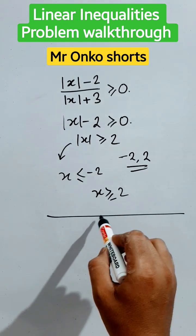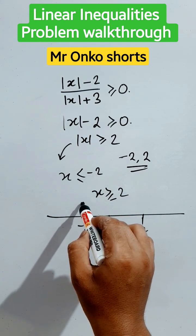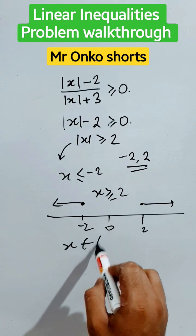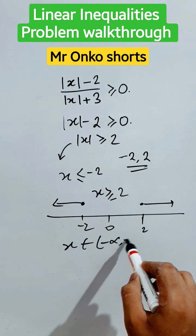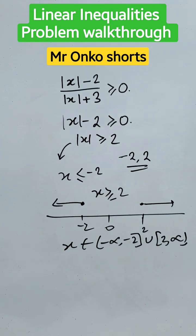So the graph will be: this is 0, this is minus 2, this is 2. This is less than closed 2 and this is greater than positive 2. So x belongs to open minus infinity to minus 2 closed, union closed 2 to infinity. That's the solution. Thank you.